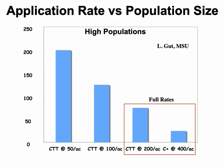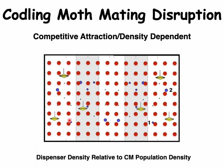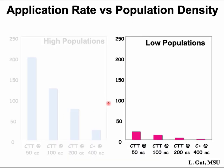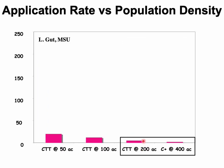Larry Gutt at Michigan State also looked at application rate — number of point sources versus population size. In high-population situations, CTT at 50, 100, and 200 per acre were all tested, and again 400 C+ with extra point sources performed best. But what happens in areas of low codling moth population density, determined by extensive pheromone trap use and block history? Under low populations, the discrepancy between different application rates gets minimized — 200 CTT per acre is not that different from 400 C+ per acre at low population density.